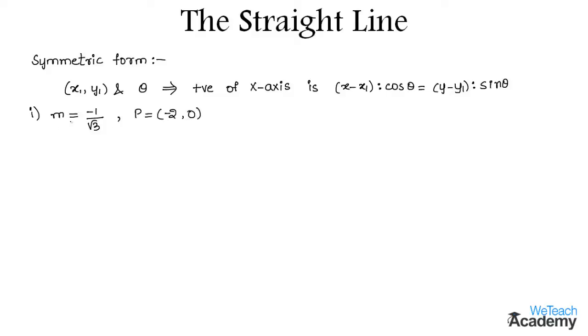As we are given the slope m which equals minus 1 by root 3, we already know that m equals tan theta. This value equals tan of 180 degrees, that is pi minus pi by 6. So that implies we get tan of 5 pi divided by 6.